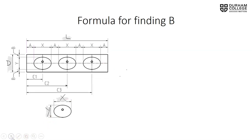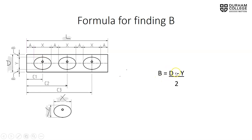To solve for B, we're trying to get two spaces — the front and the back — the same. So we take our D dimension, the depth of our counter, and subtract Y, which is the depth of our lavatory, and then divide by 2. We're going to have two equal spaces. So: B = (D − Y) ÷ 2.